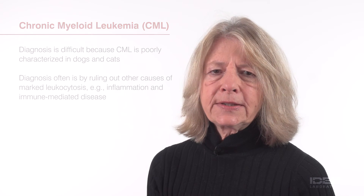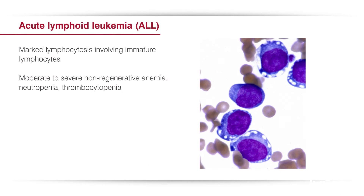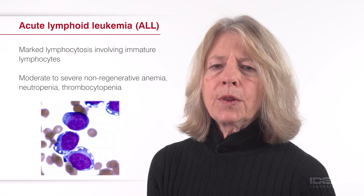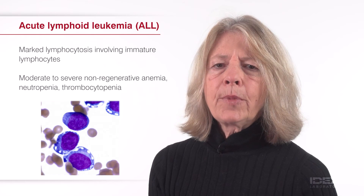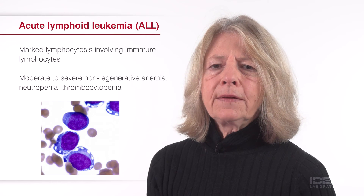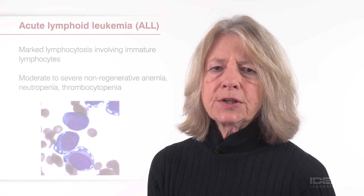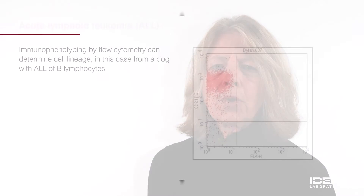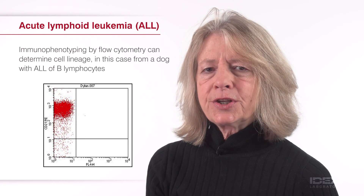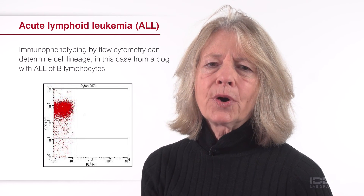Acute lymphoblastic leukemia, or ALL, is associated with acute onset of variable clinical signs. There typically is moderate to marked lymphocytosis involving immature lymphoid cells based on their large size, basophilic cytoplasm, fine chromatin, and prominent nucleoli. There may be moderate to marked non-regenerative anemia, neutropenia, and thrombocytopenia. Neoplastic lymphocytes often express the cluster of differentiation, or CD antigen, CD34. Cells of B lymphocyte lineage express CD20, CD21, and/or CD79A, whereas cells of T lymphocyte lineage express CD3 and either CD4 or CD8.